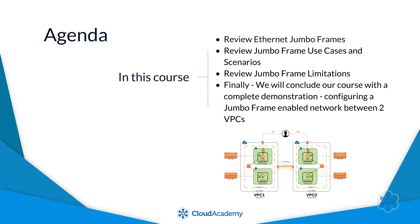We'll deploy an EC2 instance in each VPC. Each instance will be configured with a pair of ENIs. We'll establish policy-based routing such that we end up with two network paths between the instances. The first network path will have a 1500 MTU, utilizing Ethernet Jumbo Frames.